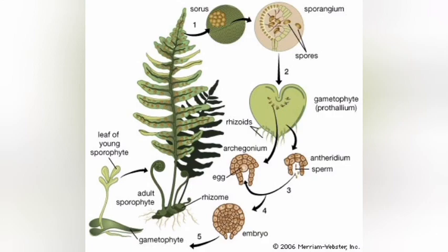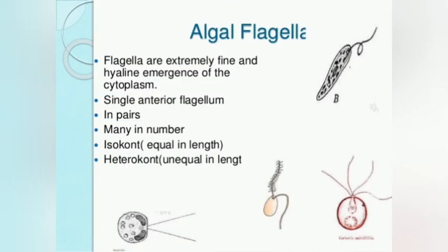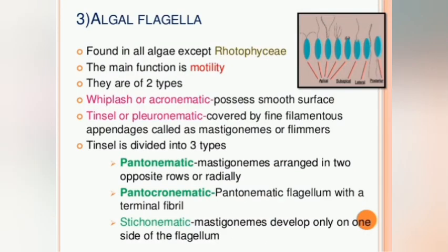Let us talk about the types of trichome morphology or groups. These include at least four types: acrematic, steichomatic, anematic, and prionimatic. Those are the types of trichome morphology in Algae.